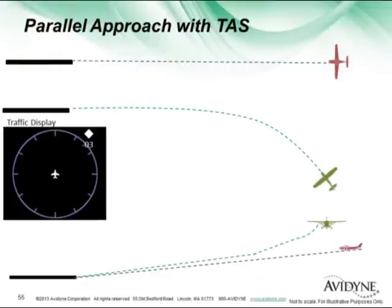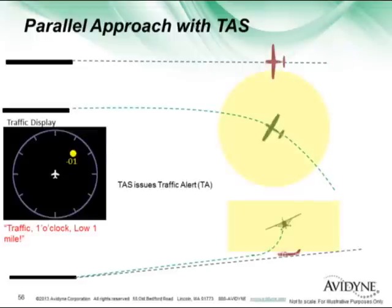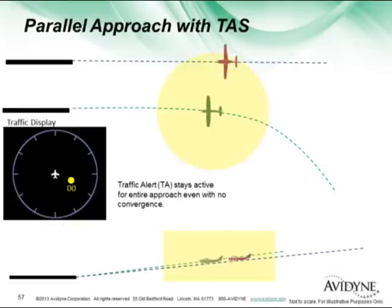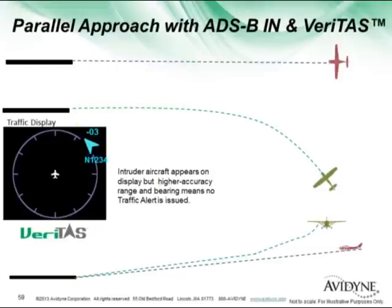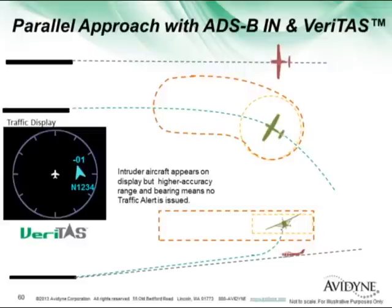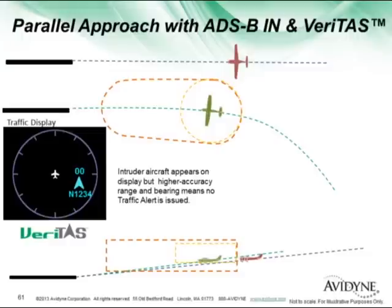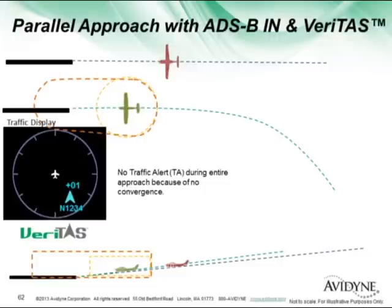Here's another scenario: I'm on parallel runways, maybe half a mile apart, and with the TAS system that's close enough to set off an alert. I may proceed with my approach, but now I've got my traffic system complaining at me all the way down — a nuisance alert that might cause me to shut it off, and then it won't be there to protect me when I really need it. With the Veritas system, tighter tolerances — I'm not going to get that alert. I know I'm on a parallel approach, I'm not within the tighter tolerances, so I can continue down without the nagging, yet I still have protection in case that aircraft deviates into my airspace within 30 seconds of warning.